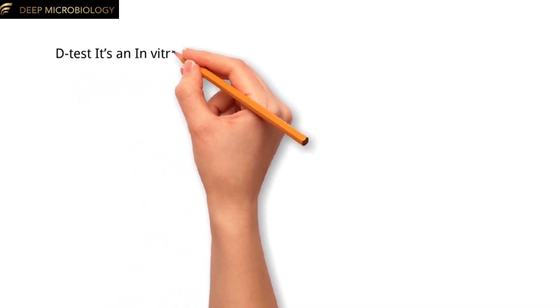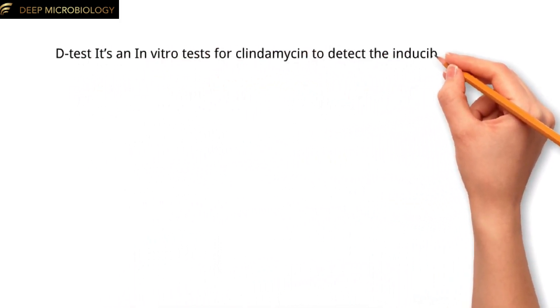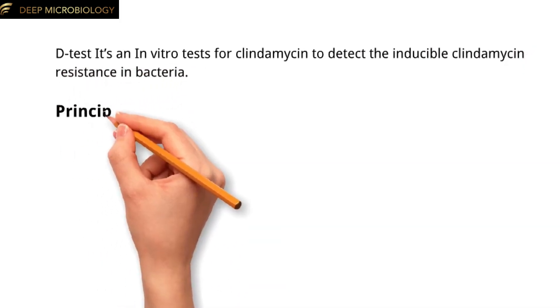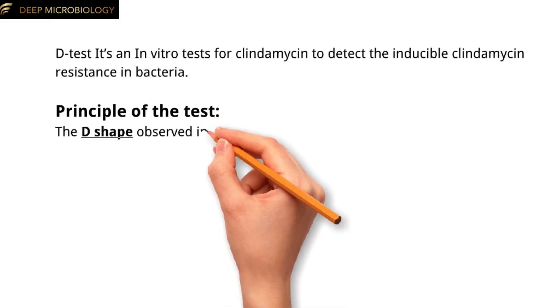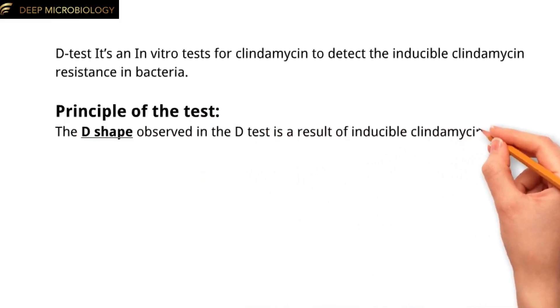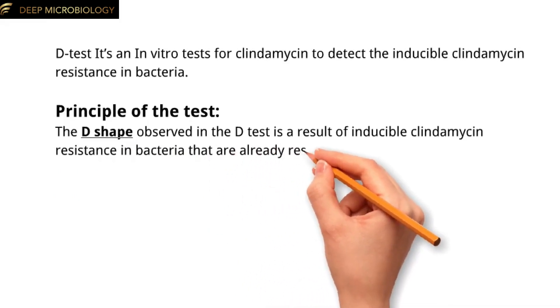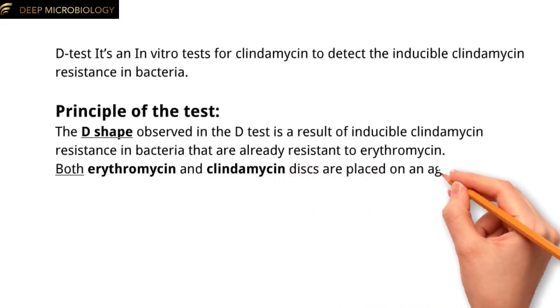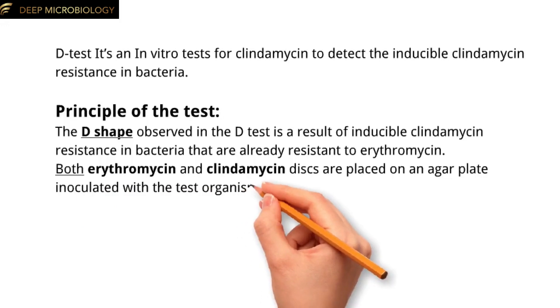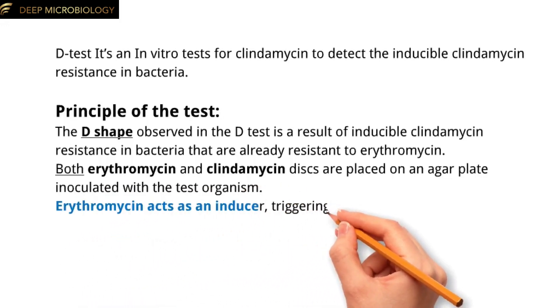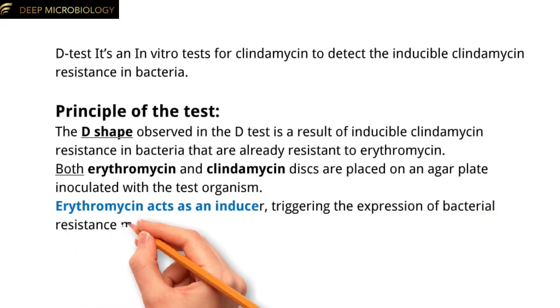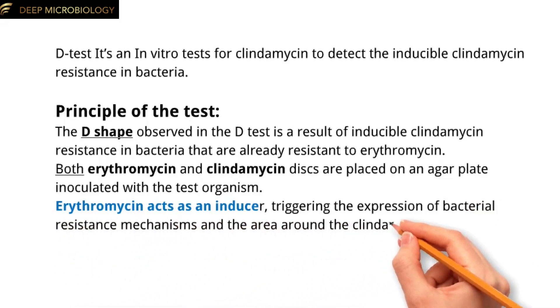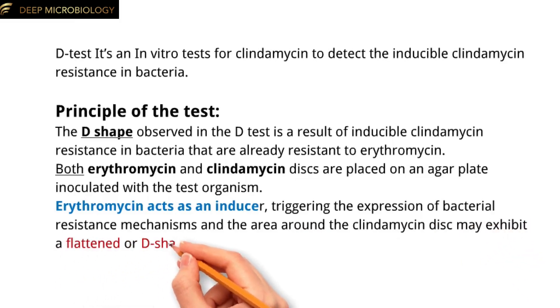The D-Test is an in vitro test for clindamycin to detect inducible clindamycin resistance in bacteria. The D-shape observed in the D-Test is a result of inducible clindamycin resistance in bacteria that are already resistant to erythromycin. Both erythromycin and clindamycin discs are placed on an agar plate inoculated with the test organism. Erythromycin acts as an inducer, triggering the expression of bacterial resistance mechanisms, and the area around the clindamycin disc may exhibit a flattened or D-shaped zone.